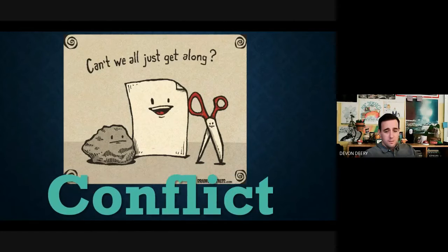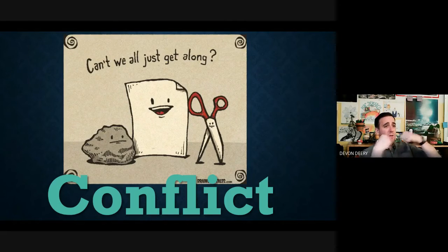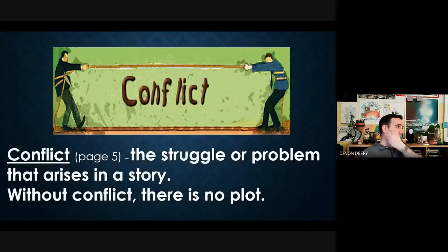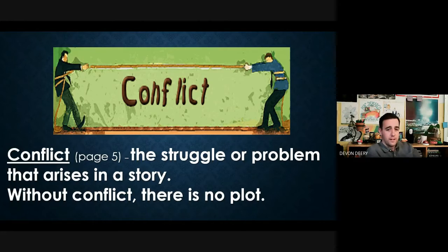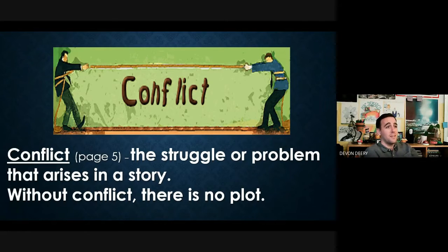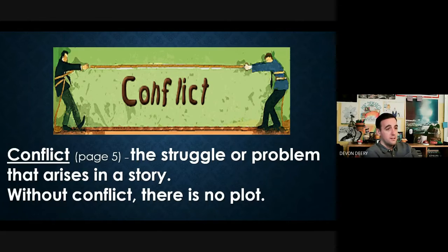Now we're talking about conflict — this is pretty important and is the backbone of storytelling. In literature, conflict is a struggle or problem that arises in the story. Without a conflict, there is no plot. You can have a minor conflict, like losing your pencil before next period, or a major conflict, like stopping an evil wizard from destroying New York City. Either way, you must have a conflict.